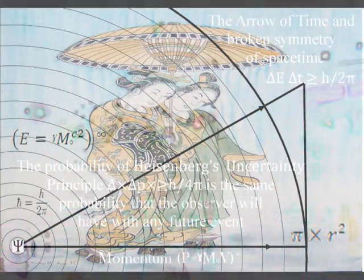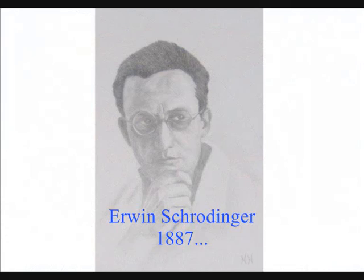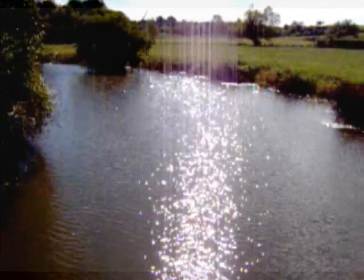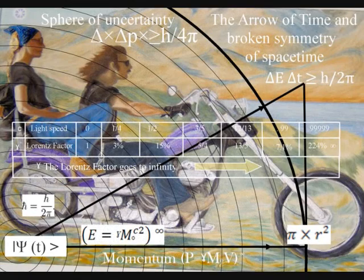This theory is based on two simple postulates. The first is that the quantum wave particle function, explained by Schrödinger's wave equation, represents the forward passage of time or arrow of time itself, photon by photon or moment by moment. The second postulate is that Heisenberg's uncertainty principle that is formed by the wave function is the same uncertainty that we have with any future event.